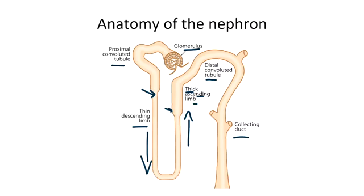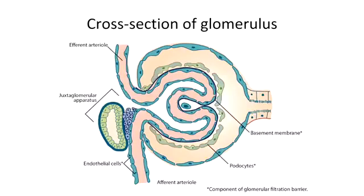My goal here is to provide you with a bird's eye view of the anatomy. We'll obviously go into much more detail about the physiology of each section of the nephron as we progress through the chapter. Now let's go into a little more detail about the glomerulus. This is figure 4.3 from your text, which shows the normal anatomy of the glomerulus. The glomerulus is just this tuft of capillaries that we can see right here.